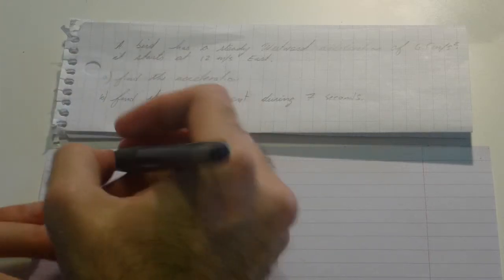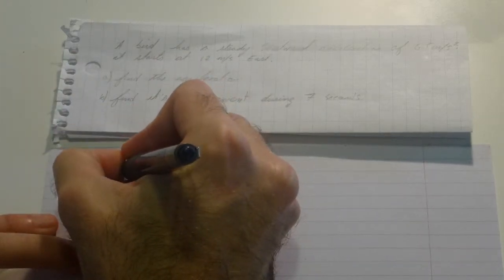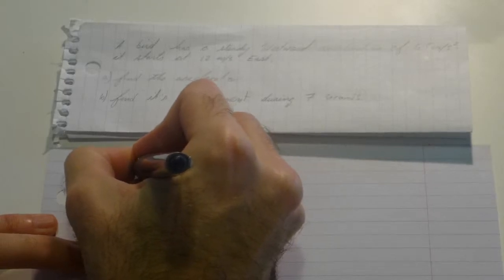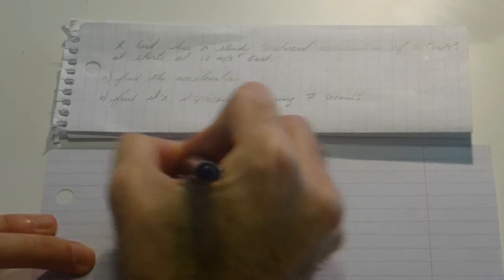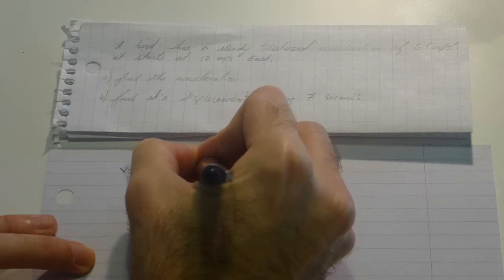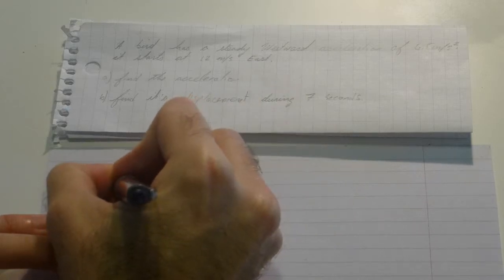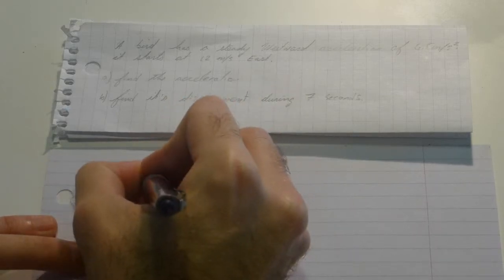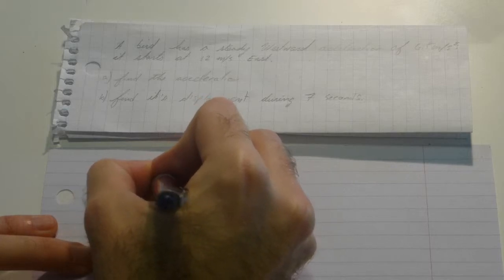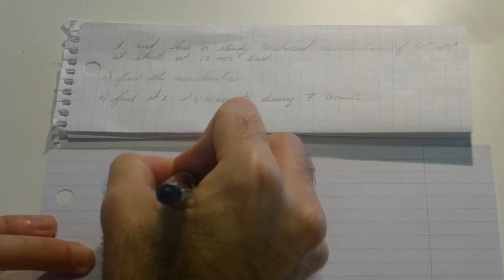In this question, Burr has a steady westward acceleration of 6.5 meters per second squared and starts with an initial velocity of 12 meters per second east. Therefore, we have V initial is 12 meters per second east, and A for the whole time is 6.5 meters per second squared west.